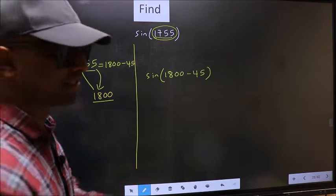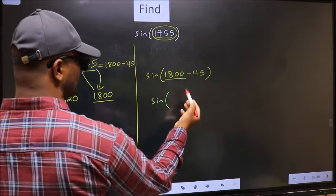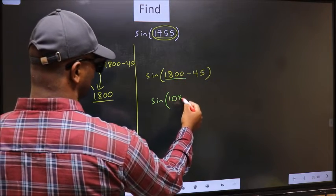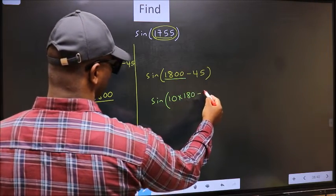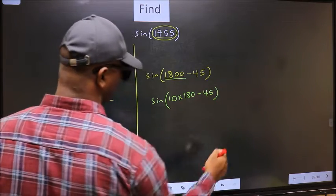Sign. In place of this, now we should write 10 into 180 minus 45. Next.